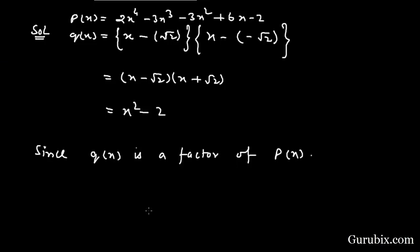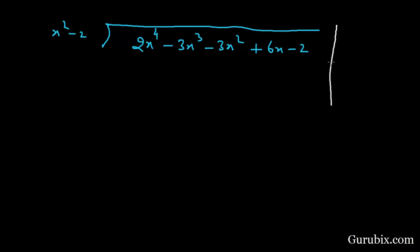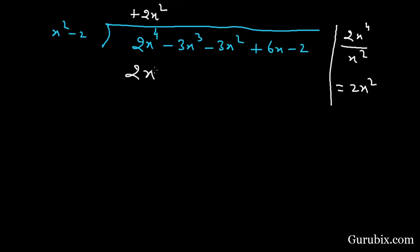Now we shall divide p(x) — which is 2x⁴ minus 3x³ minus 3x² plus 6x minus 2 — by x² minus 2. To find the first term in the quotient, we divide the first term of the dividend, 2x⁴, by the first term of the divisor, x². Then we get 2x². So the first term in the quotient is 2x². Multiplying 2x² with x² minus 2 gives 2x⁴ minus 4x².